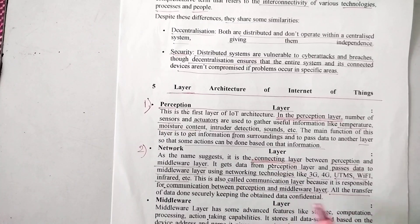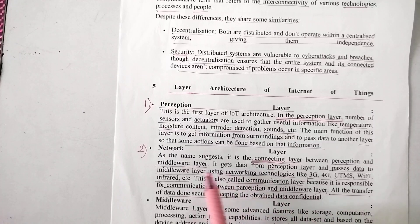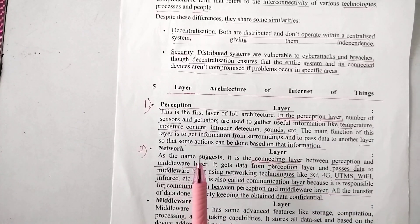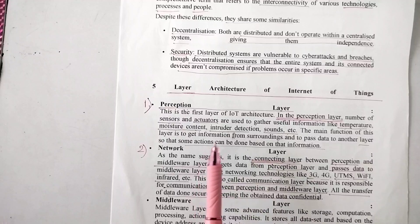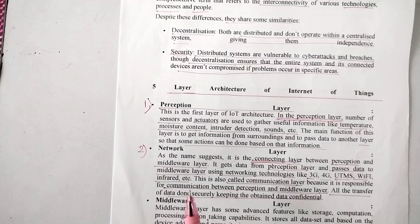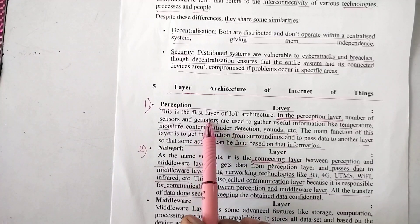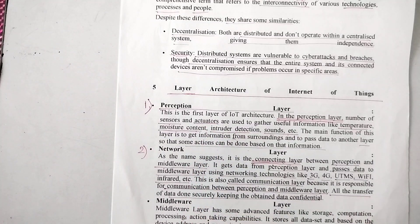All the transfer of data done securely, keeping the obtained data confidential, is done by the network layer. You can conclude that the network layer's task is to take data from the perception layer, transfer it to the middleware layer, and provide communication between them.